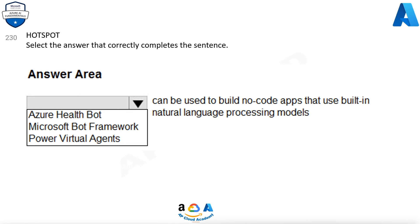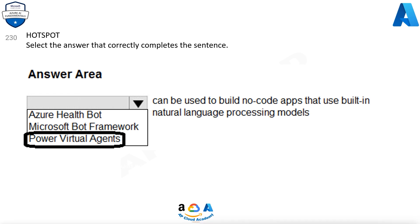Select the answer that correctly completes the sentence. What option can be used to build no-code apps that use built-in natural language processing models? Options are: Azure Health Bot, Microsoft Bot Framework, Power Virtual Agents. The correct answer is Power Virtual Agents.